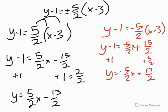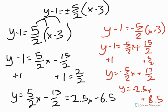You could leave these as the fractions that they're in, or if you would like, you could also write it as decimals. So this one would be 2.5 x minus 6.5. And this one over here would be y equals negative 2.5 x, plus 8.5. And so those would be your equations of asymptotes.